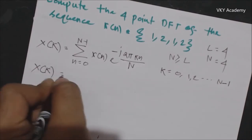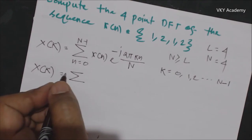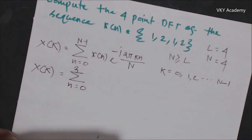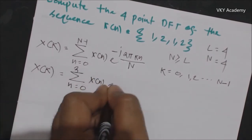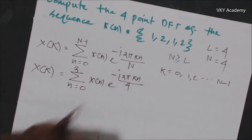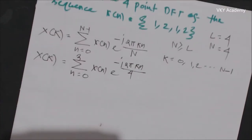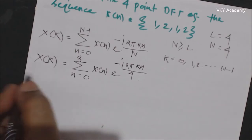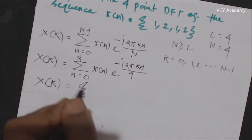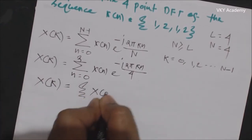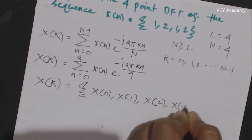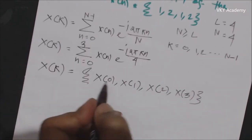In this particular question, as the length of the sequence is 4, n will vary from 0 to 3, and we sum x[n] e to the power minus j 2 pi k n upon 4, as the length of the sequence is equal to 4. We need to calculate X[k] which has 4 complex samples: X[0], X[1], X[2], and X[3].